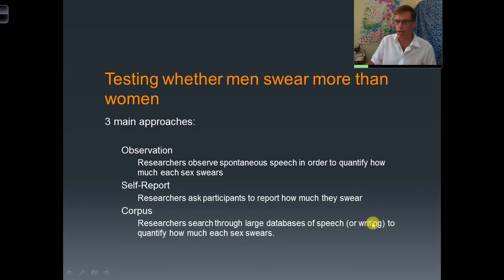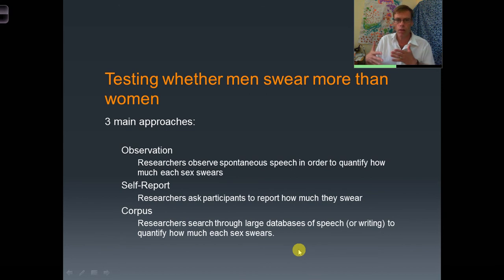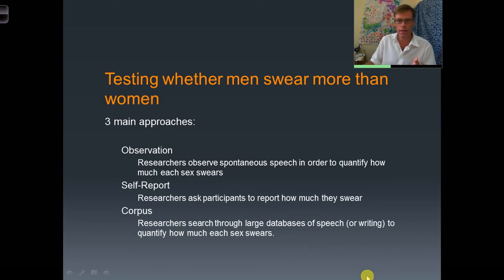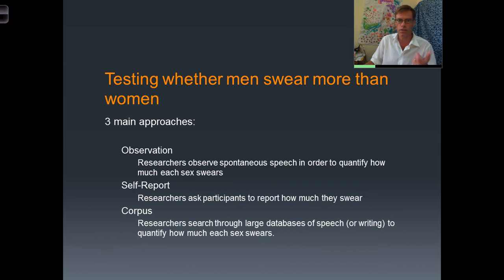Most corpora are written, although for our purposes — especially when talking about swearing — speech would be more useful, since people are much more likely to swear when speaking than when writing. All three approaches have been used historically. Observation is the most challenging in terms of time and ethics. Self-report is probably the easiest approach, except it's not always reliable — you can't always trust people's intuitions. For example, I wouldn't know how often I use the word 'fuck' if someone asked me. Do I use it daily, several times a day, weekly? Very hard to say.